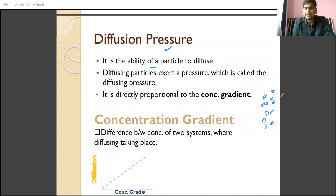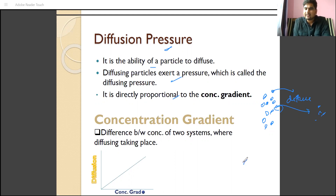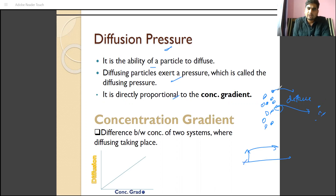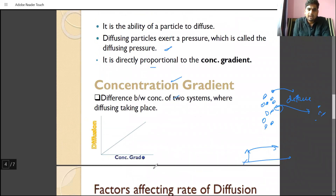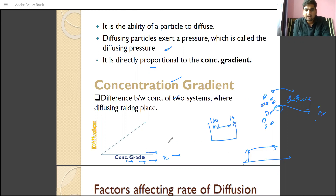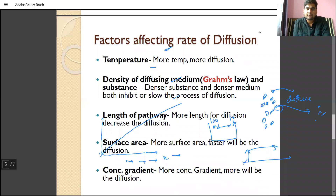Diffusion pressure is simply the ability of particles to diffuse. The particles having higher concentration in a particular area are willing to diffuse to their lower concentration area. The capacity by which they can diffuse, or the pressure they exert upon diffusion, is called diffusion pressure. It is directly proportional to the concentration gradient — as much as the concentration gradient, there will be more diffusion pressure. This relationship is shown in a plot: on the y-axis is the rate of diffusion, on the x-axis is concentration gradient, and they increase together.